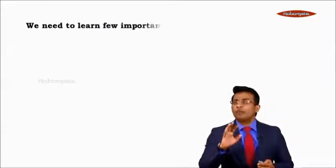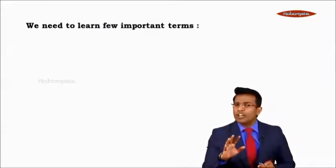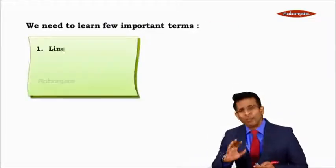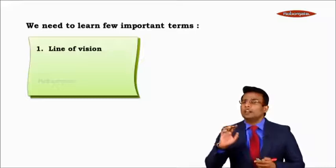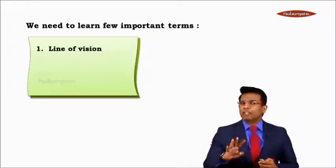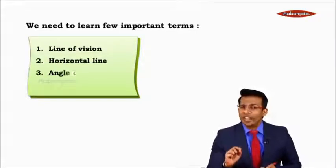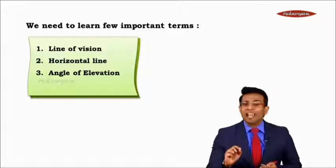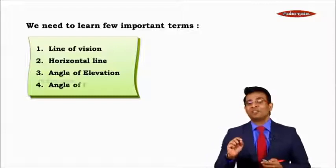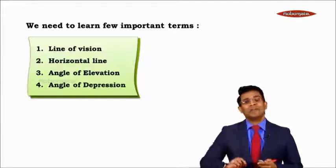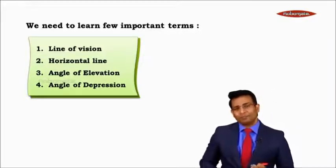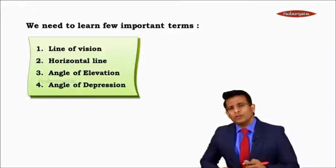To learn the application of trigonometry, there are four important terms we need to know: first, line of vision; second, horizontal line; third, angle of elevation; and fourth, angle of depression.